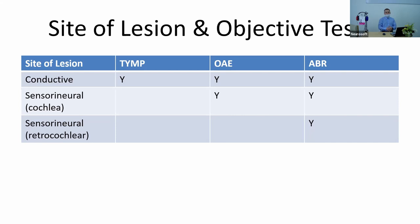Objective tests of hearing can be distinguished based on the site of lesion they help identify. We can start with tympanometry to find conductive hearing loss and middle ear problems, then continue with otoacoustic emissions to check for cochlear problems, and after this, use auditory brainstem response tests to detect any retro-cochlear pathology.